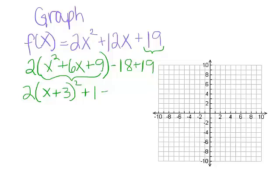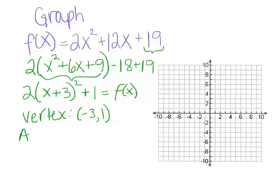This is still named f of x. Now it's old hat — we've seen this before. Our vertex is, of course, at negative 3 comma 1. Our axis of symmetry is x equals negative 3.